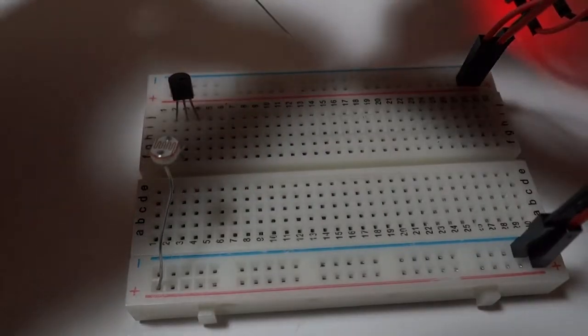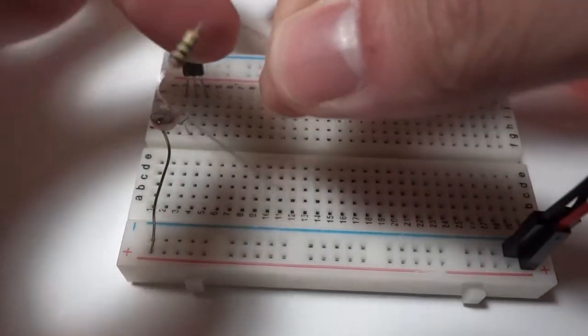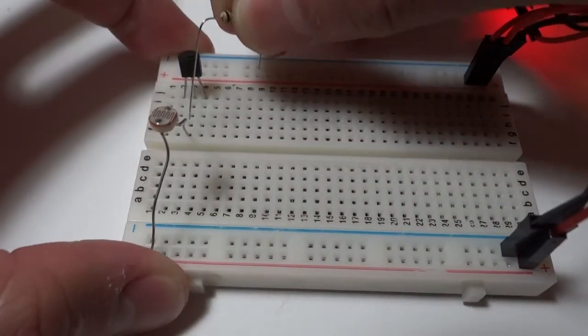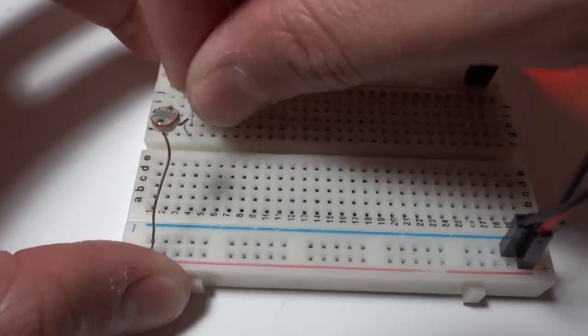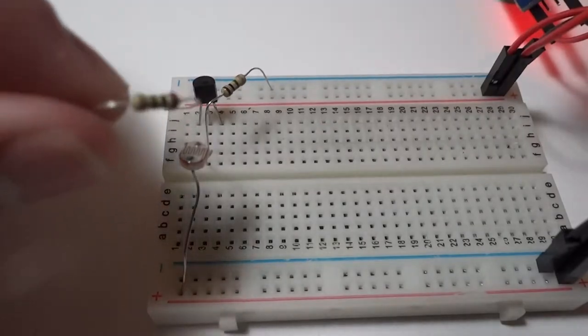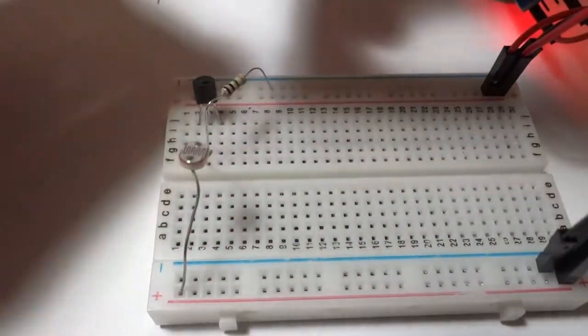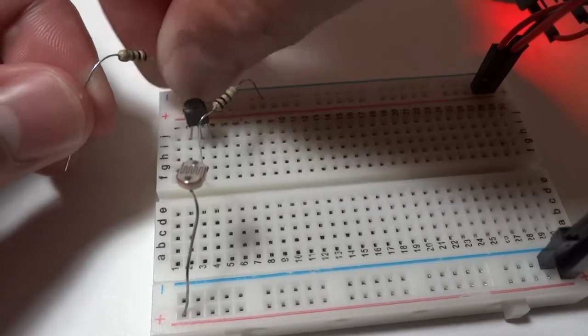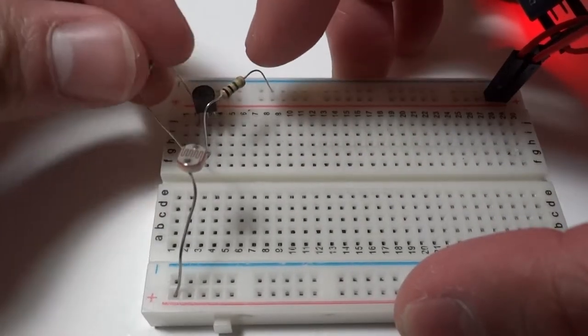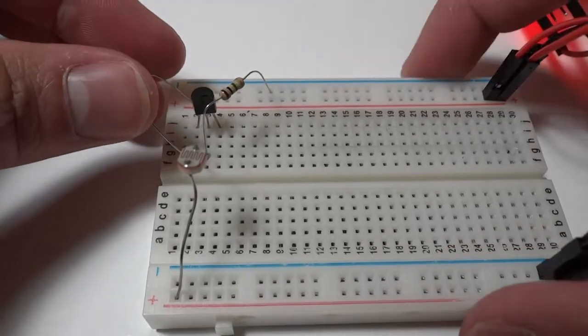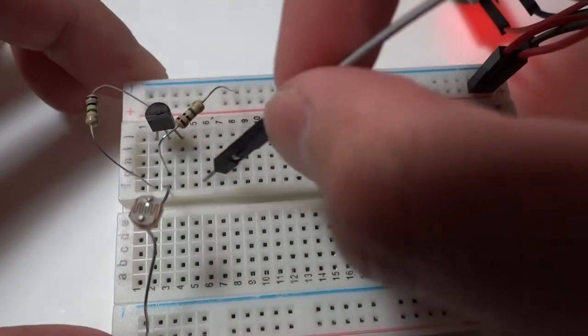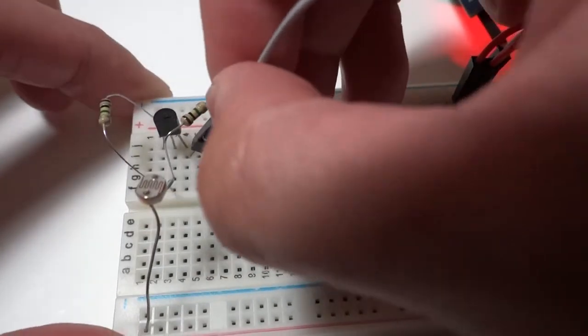Next, we take the 1 megaohm resistor and connect it from gate to ground. Take another 1 megaohm resistor and connect it from 5 volt to the drain. Finish up by connecting the source to ground. The order of what you connect doesn't really matter.